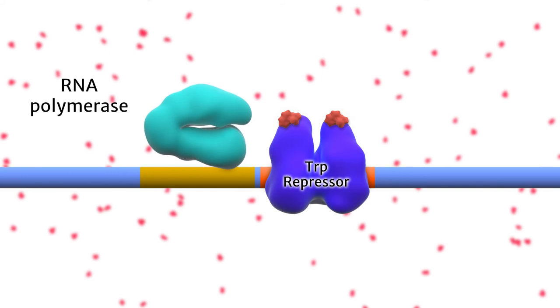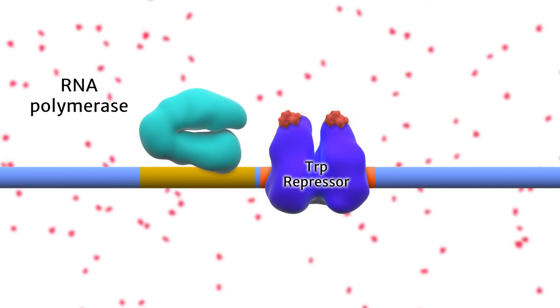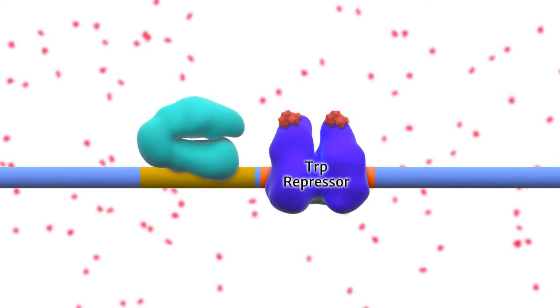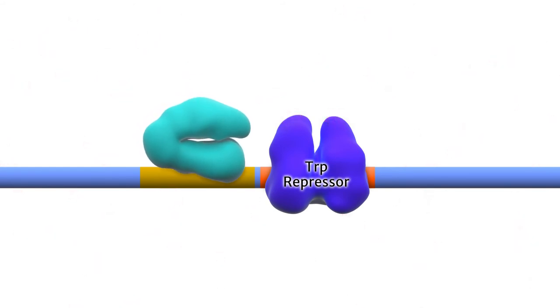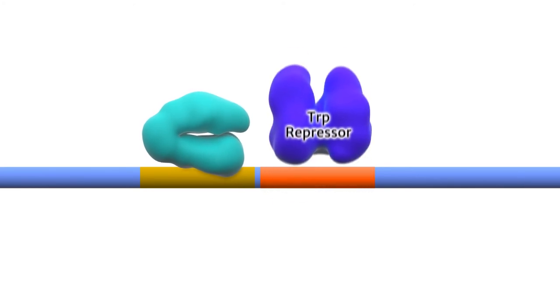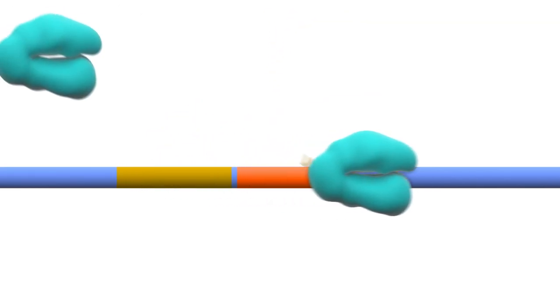Consequently, protein expression cannot take place. Protein expression only occurs after all of the tryptophan has been metabolized by E. coli. When this occurs, the trp repressor protein dissociates from the operator region and protein expression proceeds.